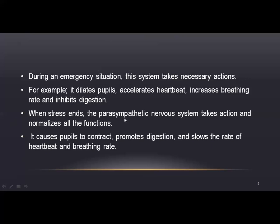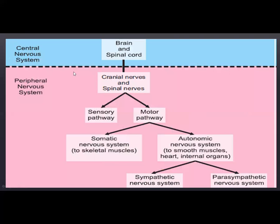The sympathetic system prepares us for stress, while the parasympathetic system returns us to the normal state. To recap: we started with the central nervous system, discussing the brain and spinal cord, then the peripheral nervous system with cranial nerves and spinal nerves. We then covered the sensory pathway and now the motor pathway.